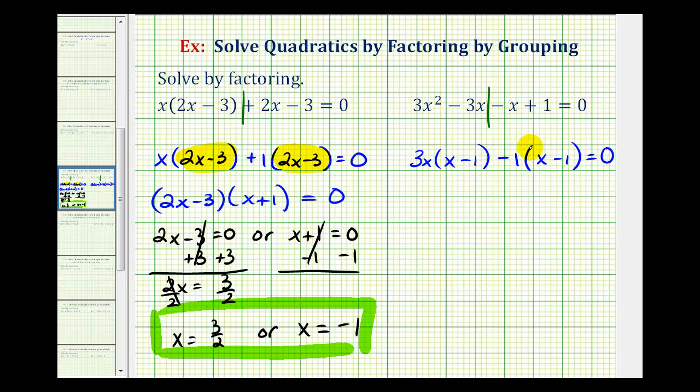Notice if we distribute here, we still would have negative x plus 1 from the original equation. Now notice by doing this, we do have a common binomial factor now of x minus 1 which we'll now factor out of these two products. So if we factor out x minus 1, notice how we're left with 3x minus 1.